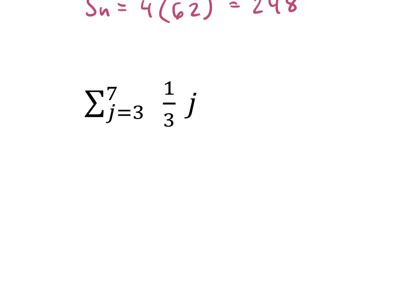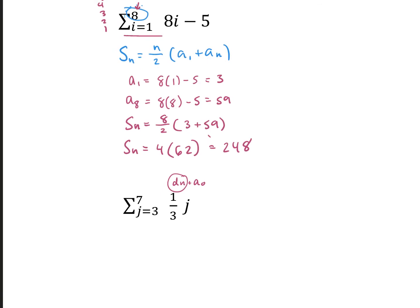For the next one, we do the same formula. Even though we're multiplying two things together, it's still an arithmetic sequence — our arithmetic sequence is d times n plus or minus a_sub_0. So we use the same formula: s_sub_n is equal to n over 2 times a_sub_1 plus a_sub_n.